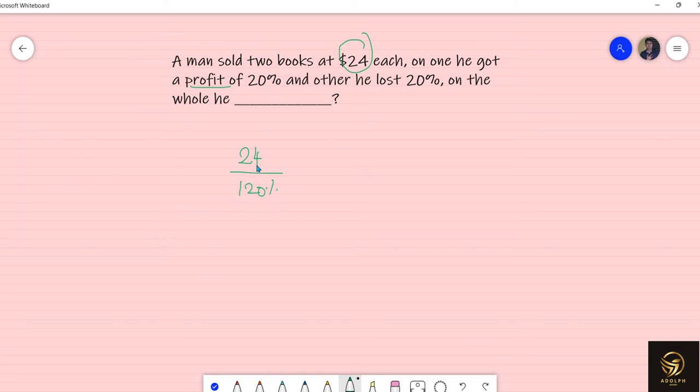To calculate the cost price or previous value, as I have told in many of my videos, if you have to go to previous calculations or backward calculations, you have to divide by the percentage by the actual value. The actual value is $24 divided by its percentage profit of 20, that is nothing but 120.